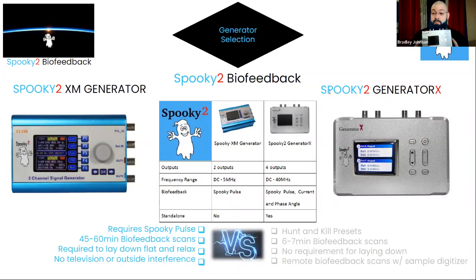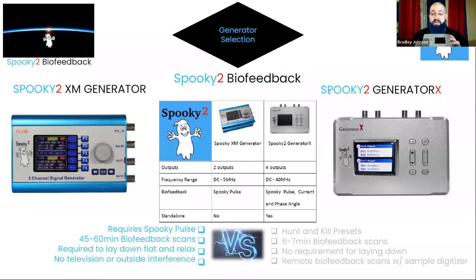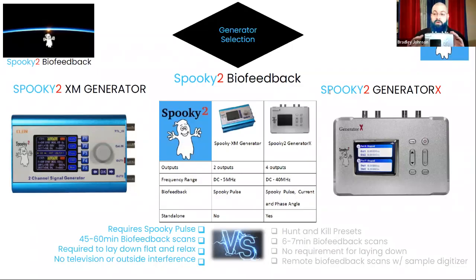The Generator X can utilize a preset called the Hunt and Kill Protocol. This hooks a sample digitizer to one generator output and a remote to the other. The software runs a biofeedback scan, then sends the results to the second generator for a 30-minute kill program, then scans again — looping until no more pathogens are found or the program is stopped. You need the Gen X for this because you can't use the sample digitizer without it, and it requires two generators.